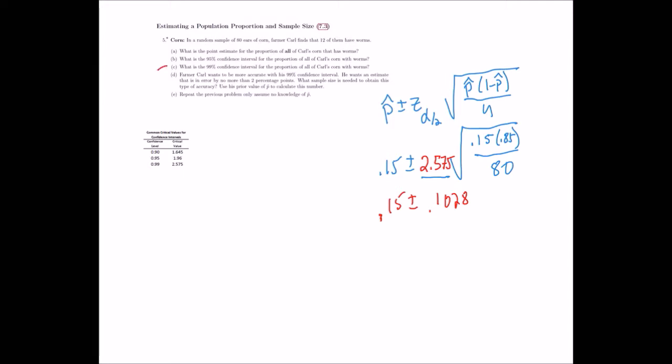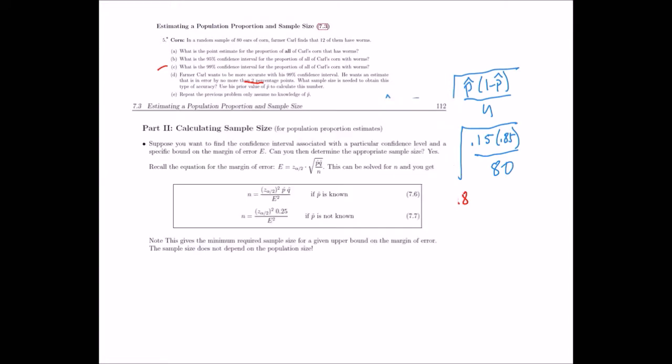Part D says Farmer Kyle wants to be more accurate with his 99% confidence interval. He wants the estimate to be no more than two percentage points. What sample size is needed? They're asking us to use the prior value for p-hat to calculate this number. We know p-hat's about 0.15, and we want the margin of error to be within two percentage points.